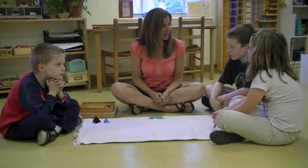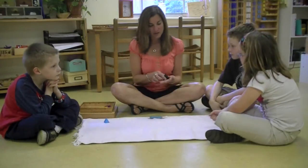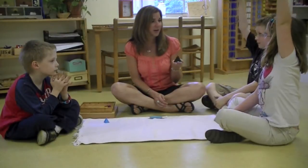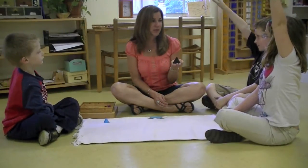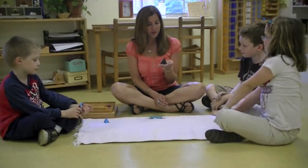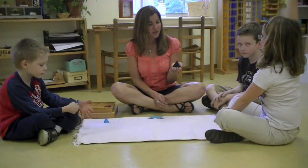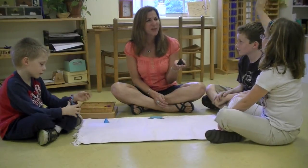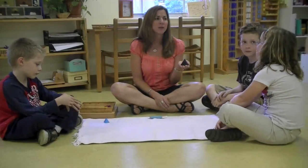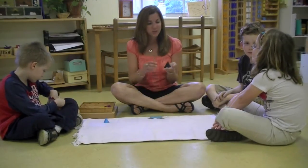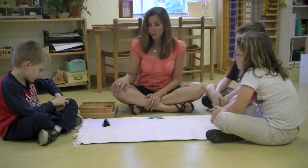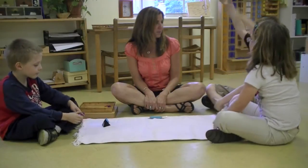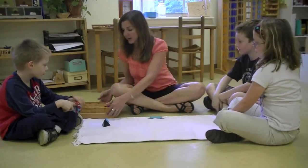Alright guys, thank you for coming to this lesson. First thing I'd like to talk about is this beautiful black pyramid. Can somebody remind me what this represents? Henry? The noun. This represents the noun, right? And Katie, do you remember what we said a noun was? We've had a few lessons. I think you know this pretty well. A person, place, or a thing. That's right. It is a person, place, or thing.